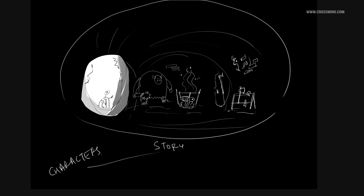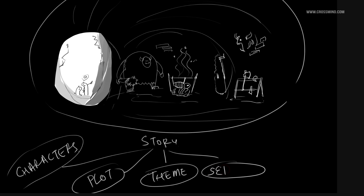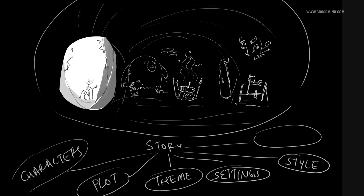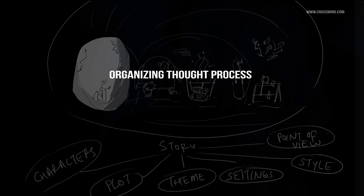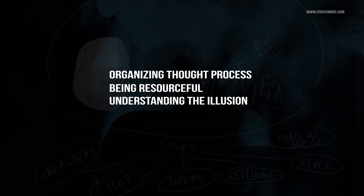Just like how everything on earth is made of a combination of different elements, every creative creation has a lot in common when broken down to the elements that make it whole. Once you identify these elements you get more control over the process — it becomes easier to understand, organize, and manage. There are three key things: organizing your thought process, being resourceful, and understanding the illusion.